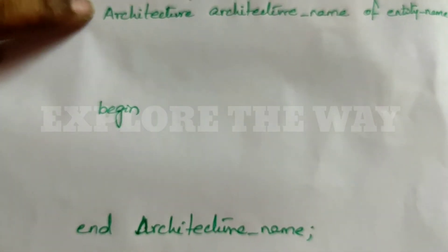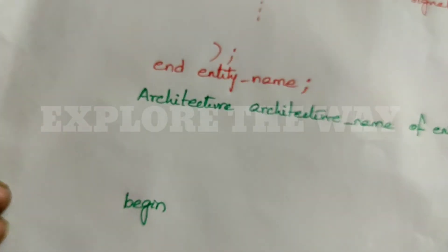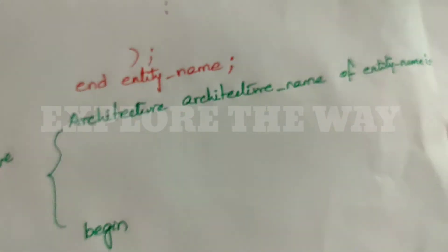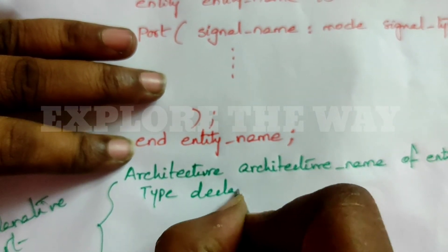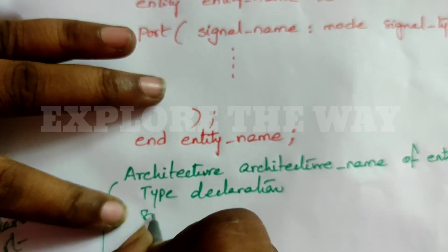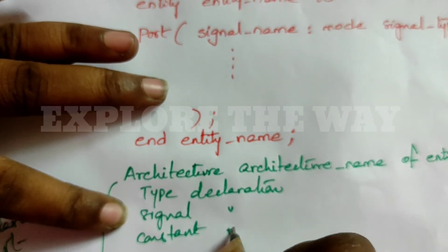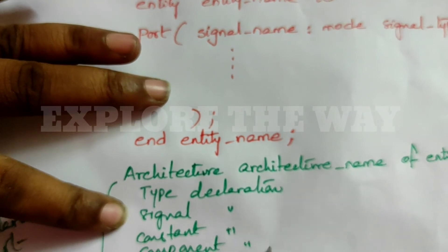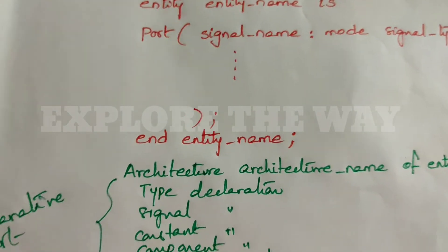The structure of architecture starts with the keyword 'architecture', and then there is a 'begin' keyword. The part before 'begin' is called the declarative part of the architecture. In this declarative part, you can write type declarations, signal declarations, constraint declarations, component declarations, function definitions, and procedure definitions.